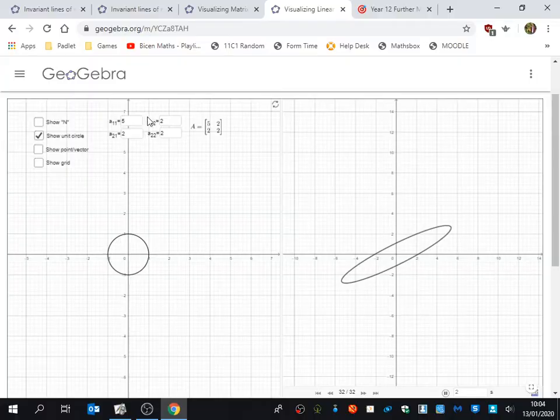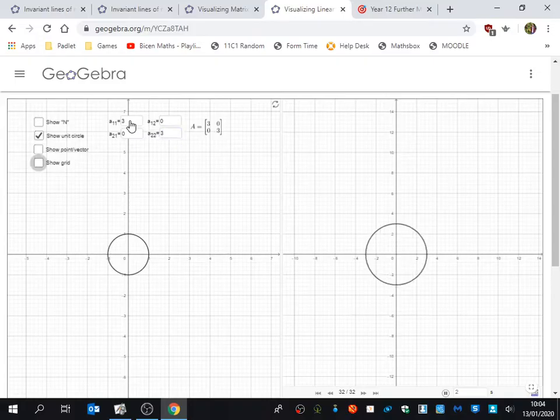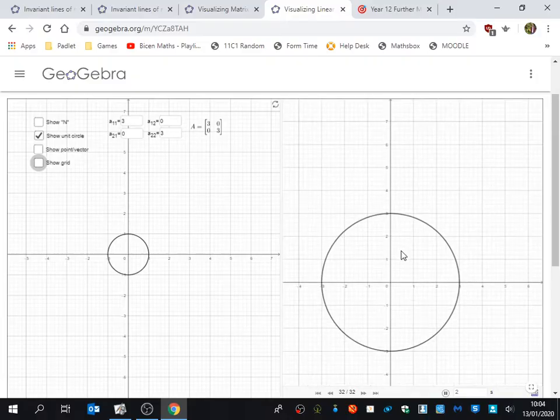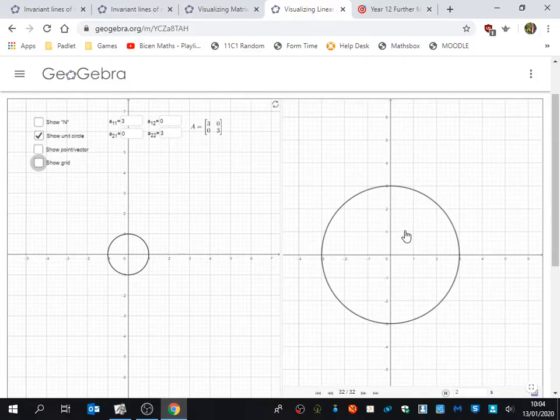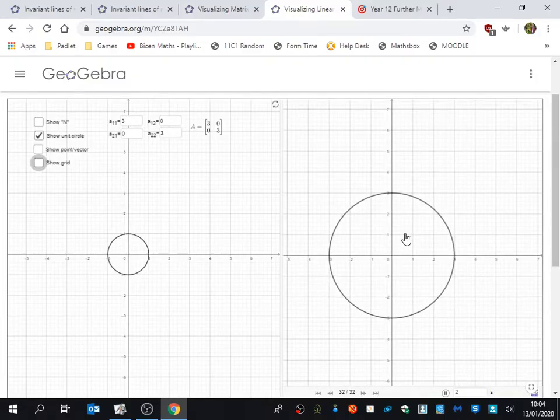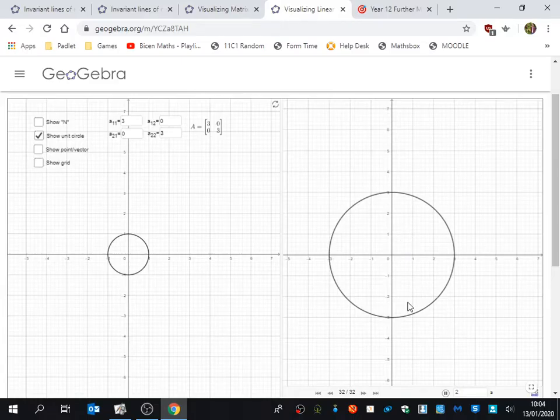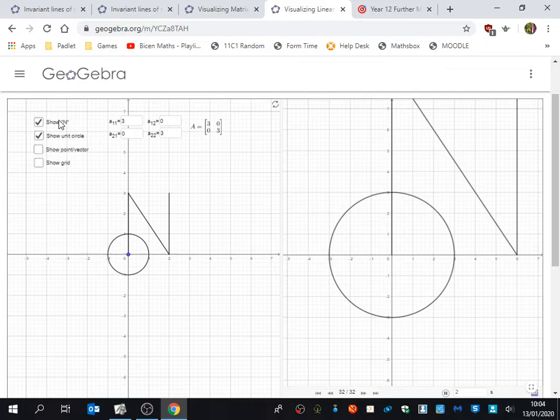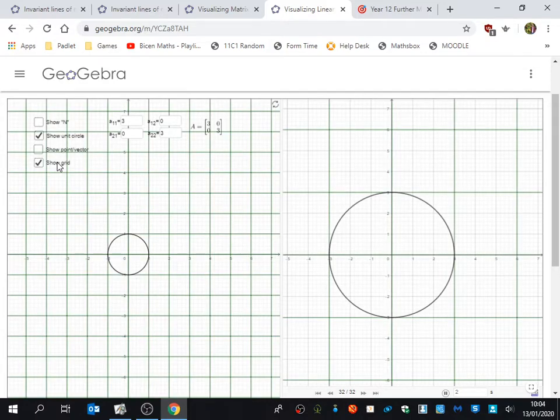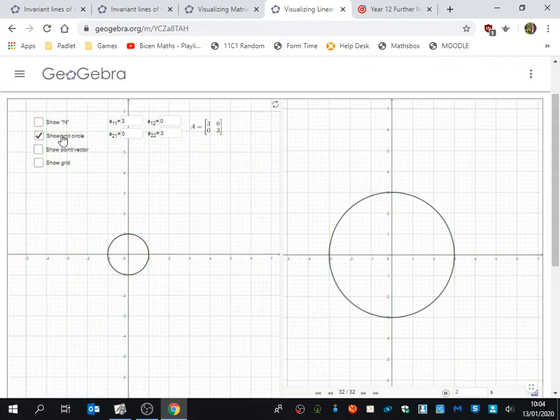So if we go to this one, we had three, zero, whoops, zero, three. So the scales are a bit different. So you can see what's happened to the circle under this transformation. It got three times bigger. The letter N has got three times bigger. And the grid has got three times bigger. This was the first one that we looked at.